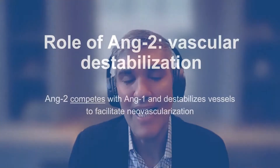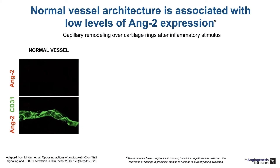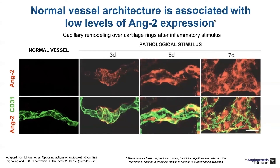Let's change gears and talk about angiopoietin 2. Overall, think of angiopoietin 2 as destabilizing the vasculature. Angiopoietin 2 directly competes with ANG1 for binding to the TIE2 transmembrane receptor tyrosine kinase and therefore facilitates vascular breakdown and neovascularization. In a preclinical model, under the resting state there are very low levels of angiopoietin 2, but as you physiologically challenge the model and induce an inflammatory response, there is a dramatic increase in angiopoietin 2 expression shown by immunohistochemistry.